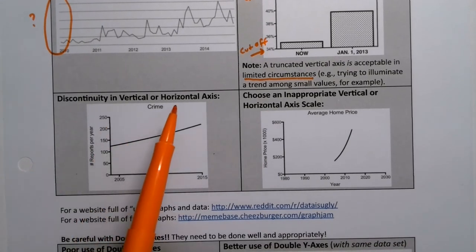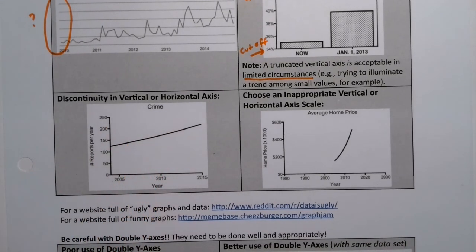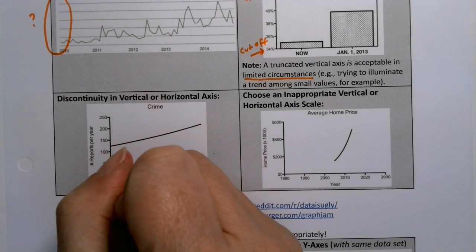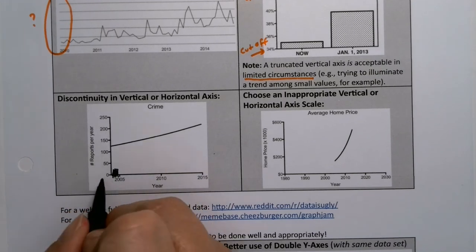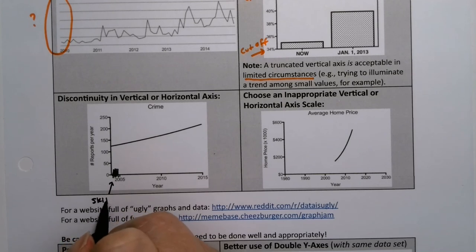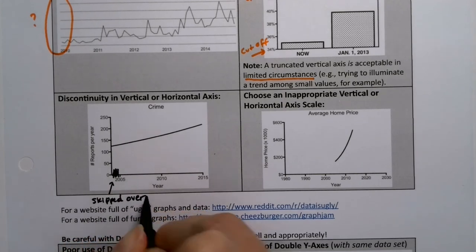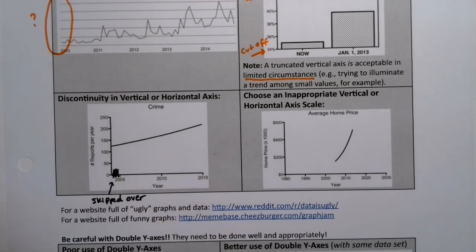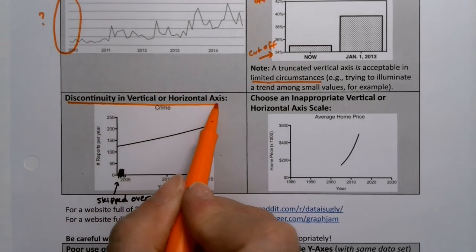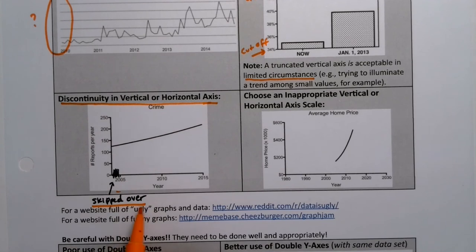Another issue is discontinuity in the horizontal or vertical axis. For example, this particular graph went from 2005, 2010, 2015, and they have a little marker at the front to show that it was truncated on the horizontal axis — they just kind of skipped over stuff. If you see that little sign, that means they skipped over data. It's not necessarily the end of the world, but you want to note it. Generally, you don't want to skip values unless there's a valid reason.